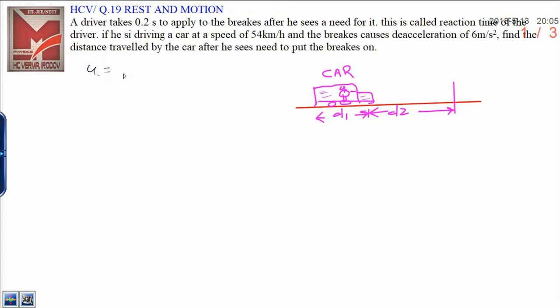Converting 54 kph into meters per second: 54 times 5 upon 18. That will be 15 meters per second. This is the initial speed.